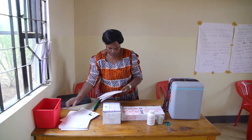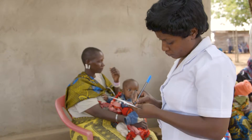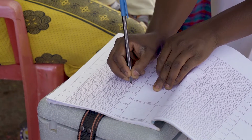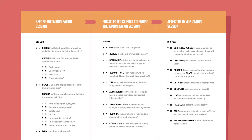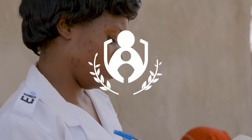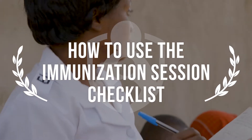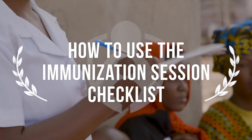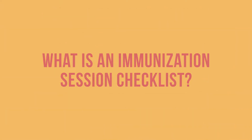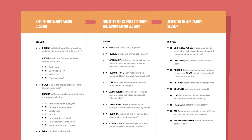As a health worker, you know there are many tasks and materials involved at every step of an immunization session, from checking vaccines to recording each injection. The immunization session checklist can help you remember everything you need for a complete, safe session. This checklist is a reminder of key points for preparing, carrying out, and closing sessions. It is meant to reinforce positive actions. To use this list,